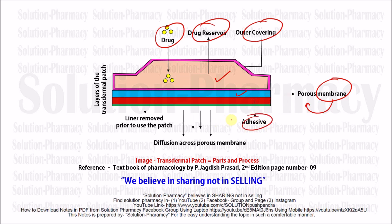Just beneath the porous membrane there is an adhesive. The adhesive helps to stick the patch onto the skin so that it will not be removed from that particular part. The next and last part is a sticker — a thin layer of film that has to be removed prior to use, so that the porous membrane will allow the release of drug from the drug matrix to reach the skin.